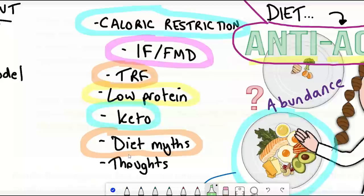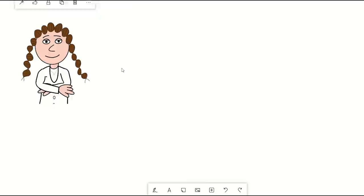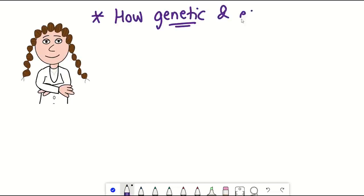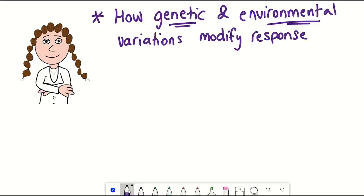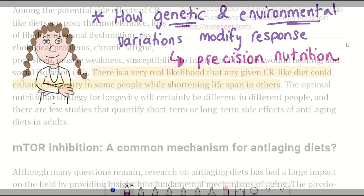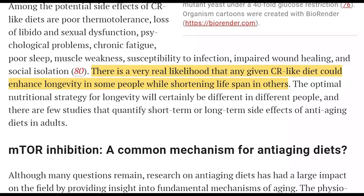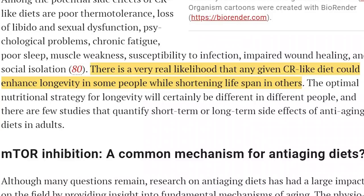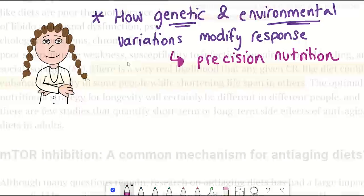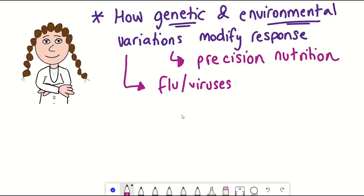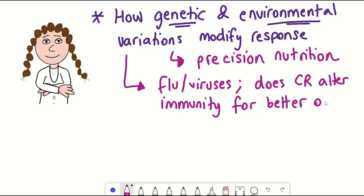So clearly questions remain, but generally it seems eating less and reducing mTOR activation seems currently the most likely anti-aging diet. But clearly important questions remain. One really important factor to understand is how genetic and environmental variation modify the diet response, especially in understudied populations. This also goes beyond the surface level of like food allergies, which should already tell you that there can't be one universal anti-aging diet. But it enters the realm of precision nutrition, the idea that each of us will ultimately have a diet that is best for us. For example, as written in this article, there is a very real likelihood that any given caloric restriction-like diet could enhance longevity in some people, while shortening lifespan in others. And the second important point is in the context of environmental challenges, for example, viruses and flus, as there are concerns that dietary restriction may put you at risk of having a weaker immune system. And the fact I have to use words like may further demonstrates that research in these areas, in terms of human studies, is really lacking.